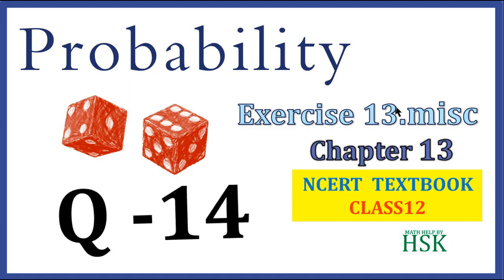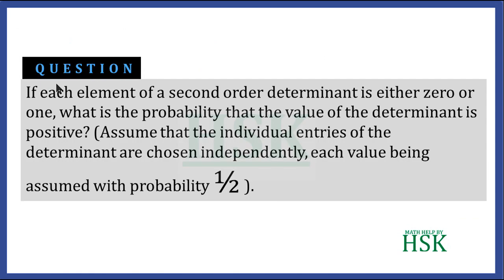This is question number 14 of miscellaneous excise of chapter 13, that is probability. The question is: if each element of a second order determinant is either 0 or 1, what is the probability that the value of the determinant is positive?